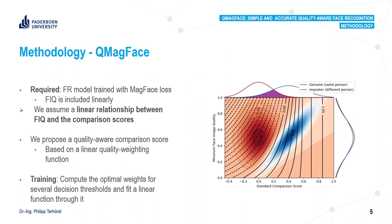Usually at the top you can see the comparison score distribution for different persons in red and the same person in blue, and they have a strong overlap. But if we not only look at the comparison scores but also at the qualities at the same time and apply our method — shown here as the black lines — we can much better separate between these two distributions.